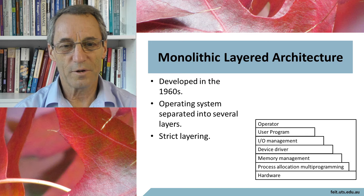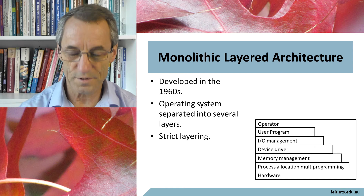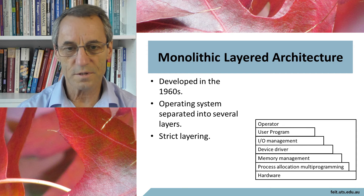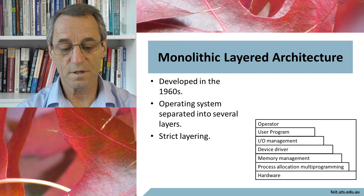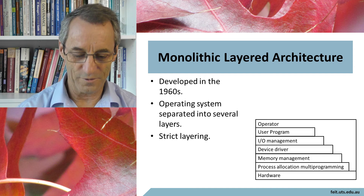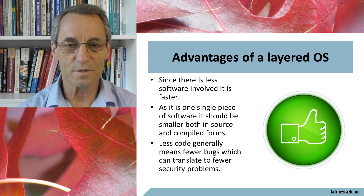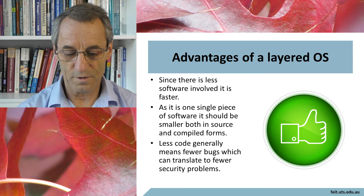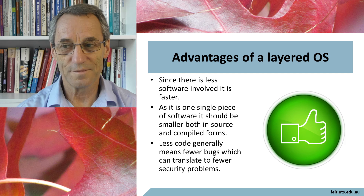The big competitor to microkernel architecture is monolithic architecture. It just means that it's in one block of code instead of being separated out into isolatable layers. Monolithic architecture arose in the 1960s, and although the operating system is in one block, it is separated into several layers, and there is strict layering — they learned very quickly that the only way to keep this under control was to have strict layering. The advantages are that since there's less software involved, it's faster. There's also less inter-process communication and less context switching. It should be smaller in terms of source code and compiled forms, and less code usually means less bugs — all other things being equal.